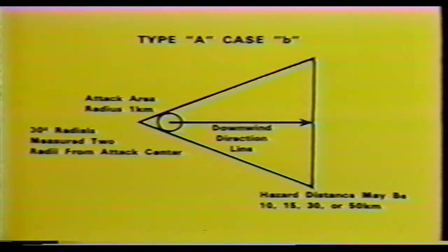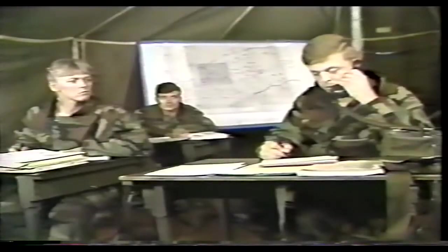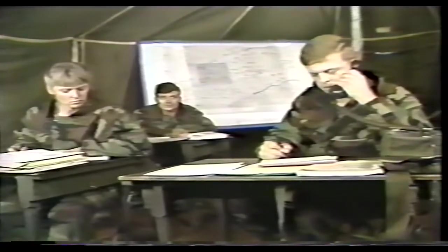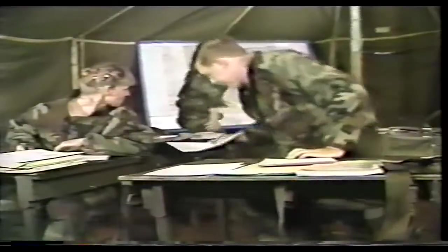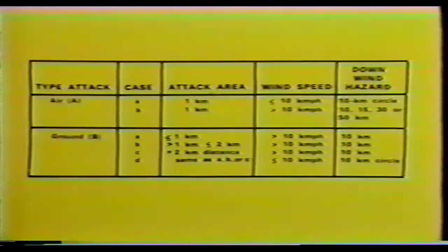The procedures just shown result in a fan-shaped hazard area prediction. Now let's follow the procedures for a ground-contaminating agent with a wind speed less than 10 kilometers per hour. Four cases must be considered when plotting the downwind hazard area for a Type B attack. The first three cases are for wind speeds greater than 10 kilometers per hour. The fourth case is for wind speeds less than or equal to 10 kilometers per hour.